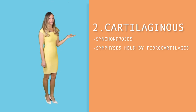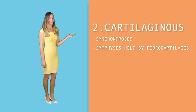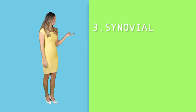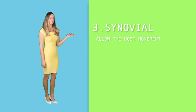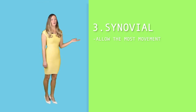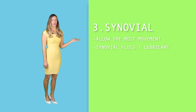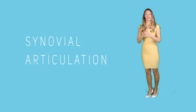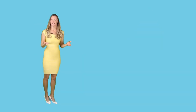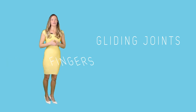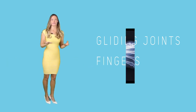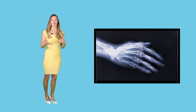Symphysis is another type of a cartilaginous joint — these joints are held together by fibrocartilages. Third, synovial joints allow the most movement for bones. There is a synovial membrane at the bone which produces synovial fluid, which acts as the lubricant to allow free movement. Amongst these three structural types, the synovial articulation is further classified into several kinds. Gliding joints, such as those found on your fingers, can make your fingers move in all directions.